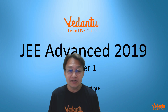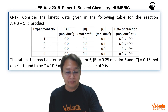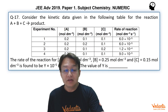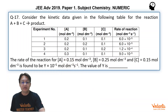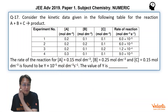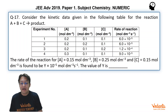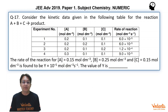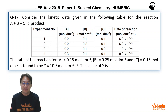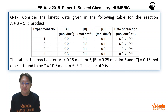Let's see what this problem is. The problem is: consider the kinetic data given in the following table for the reaction A plus B plus C changing into product. In 4 experiments — in experiment number 1, concentration of A is 0.2, B is 0.1, C is 0.1.